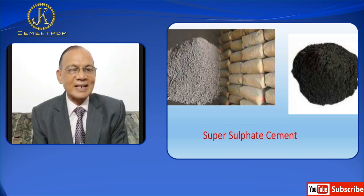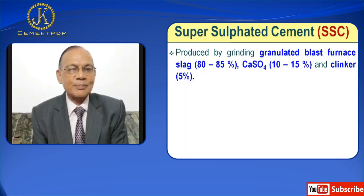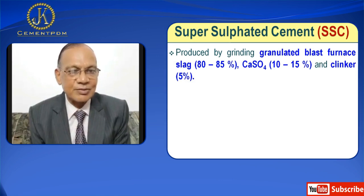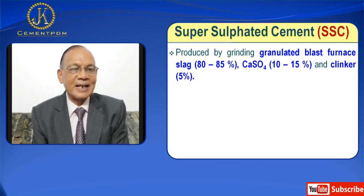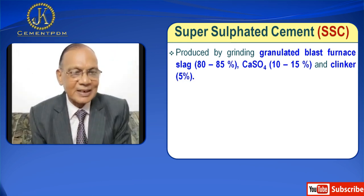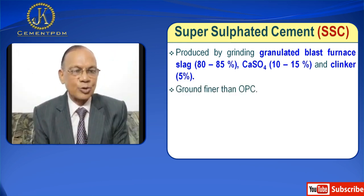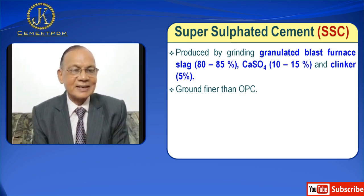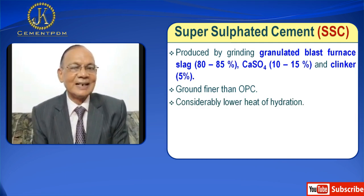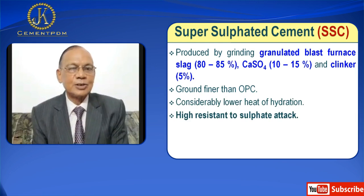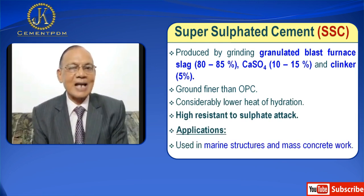Next is Super Sulphated Cement, SSC. It is produced by grinding granulated blast furnace slag — 80 to 85% — with calcium sulfate (CaSO4) 10–15% and clinker 5%. It is ground finer than OPC and has considerably lower heat of hydration than OPC. It has high resistance to sulfate attack. Applications: used in marine structures and mass concrete.